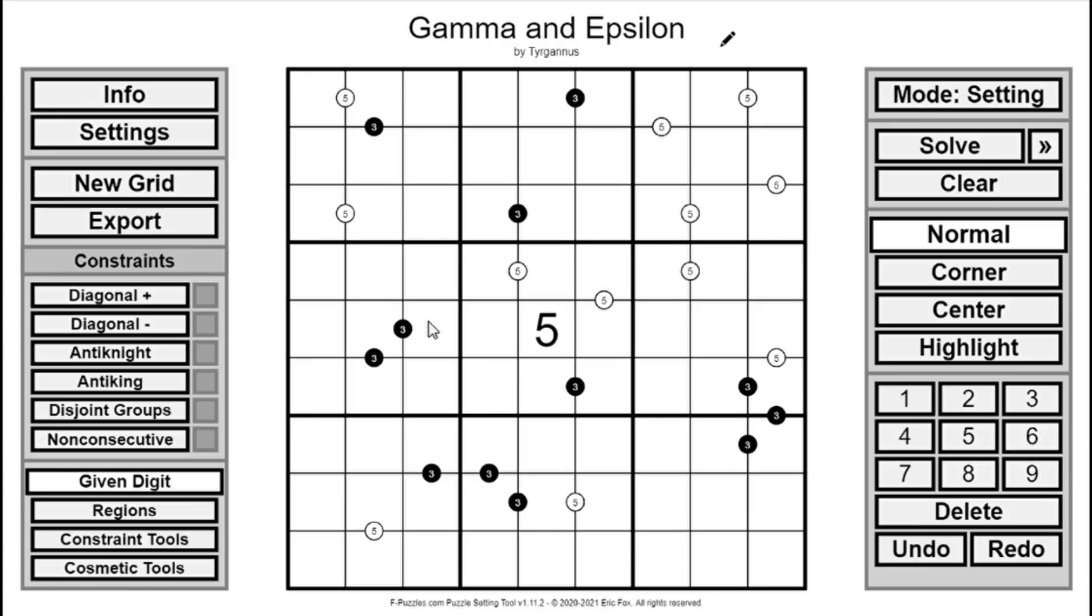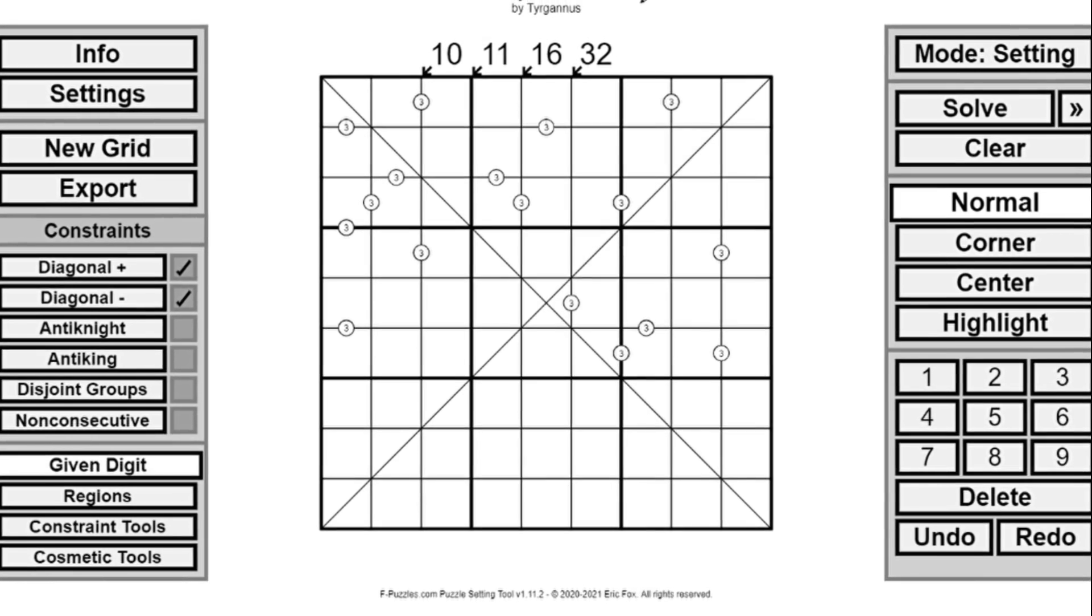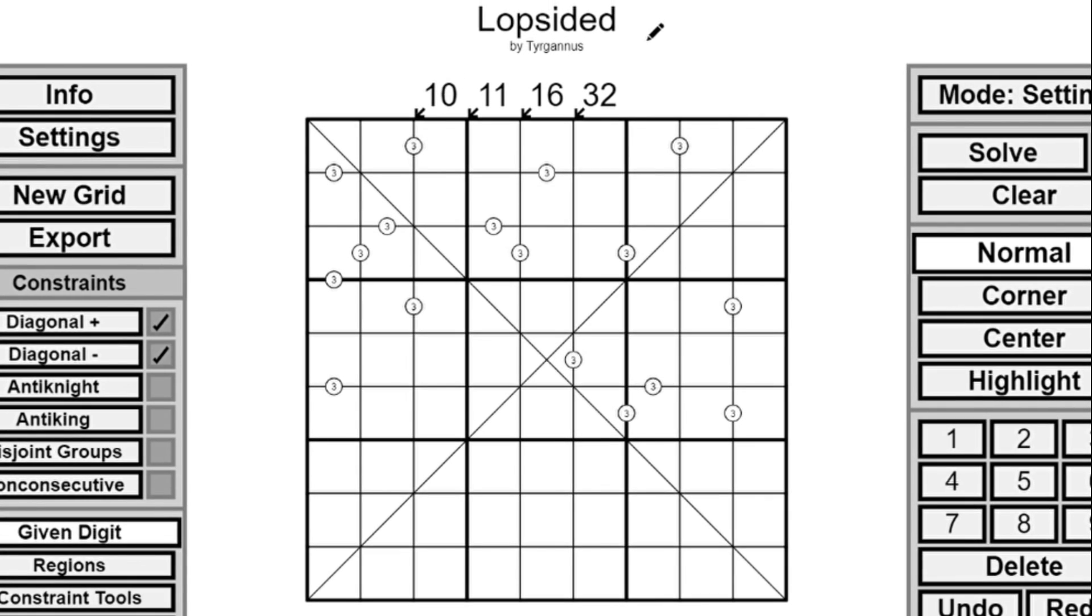But I'd already done the difference five thing, a lot of people have done the difference one, so let's try another total. That leads to this puzzle, Lopsided, which features difference three. Now, why am I using odd differences? That's actually a parity reason.